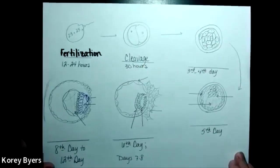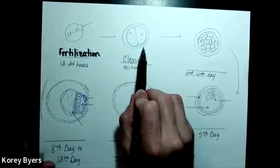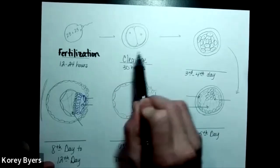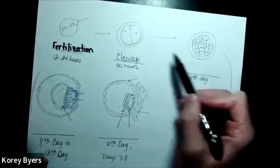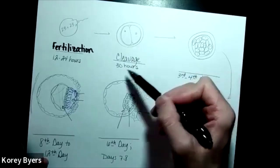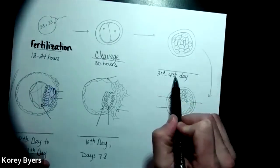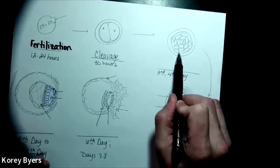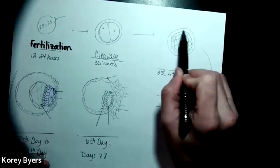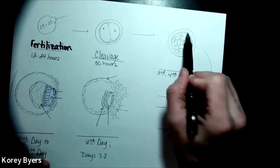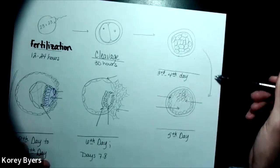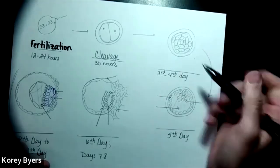Then those cells continue to divide throughout day one, day two, day three. Eventually two becomes four, four becomes eight, eight becomes sixteen. By about the third to fourth day, that group of 16 cells inside that hardened zona pellucida can actually leave the uterine tube and head down into the uterus.